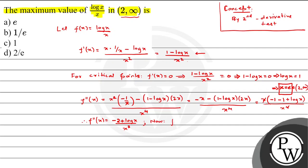Now, f''(e) = (-2 + log e) / e³. Since log e = 1, this gives (-2 + 1) / e³ = -1/e³, which is less than 0. Therefore, f''(e) < 0 implies x = e is a point of maxima.